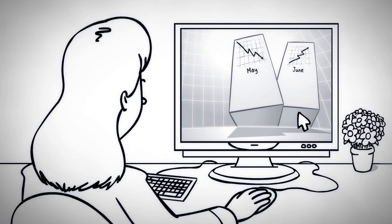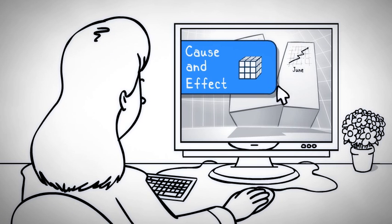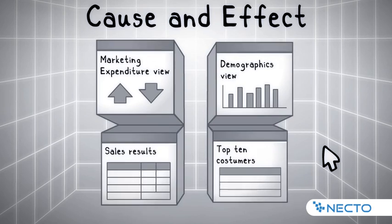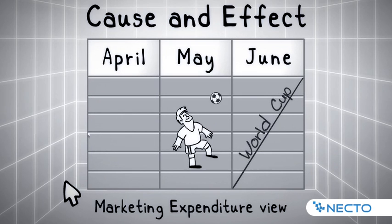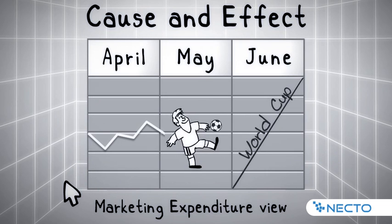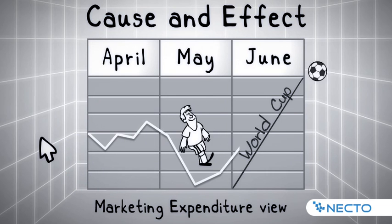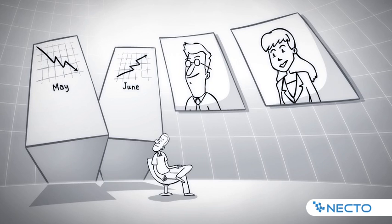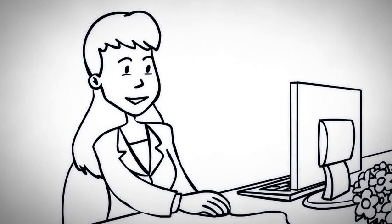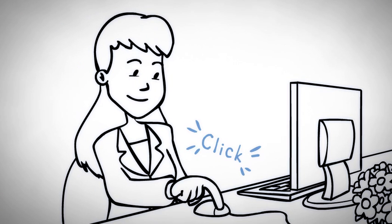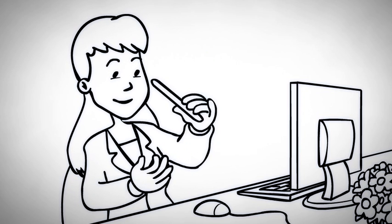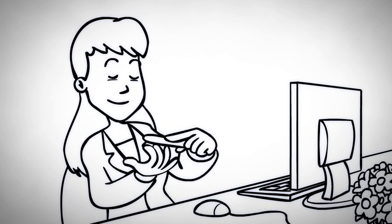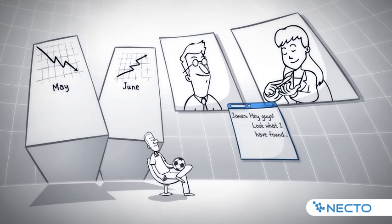Instead of researching all the marketing data, Valerie uses cause and effect to investigate the problem. The system automatically points out that they had reduced marketing spending in May in order to run TV ads for men's sneakers during the World Cup in June. In just one click, Valerie was able to quickly find the root cause of the problem, saving her hours of research.